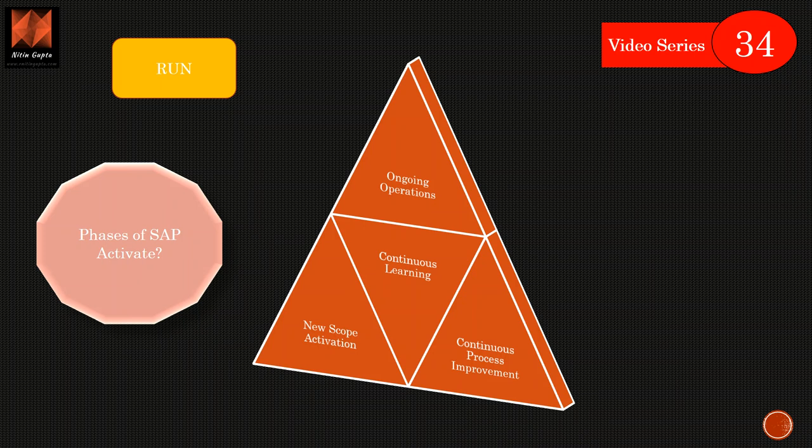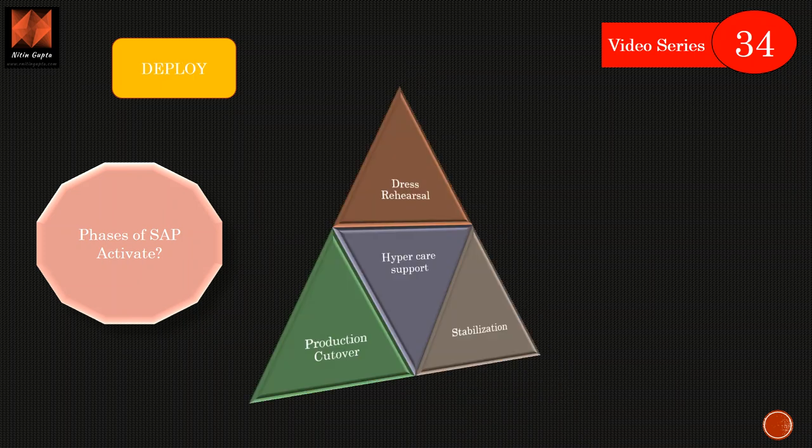But at the same time we also do the new scope activation. So once we go live we say okay we want to add the scope, business is happy they are looking for more fruits so we add scope. And then once the scope is added it goes through the whole cycle again where if it is a small change we can take it like this, but if it is a big another major project needs to be started then of course it goes through the again the whole process.